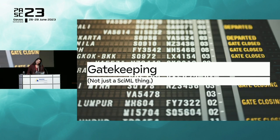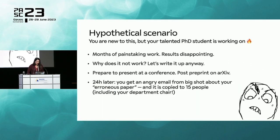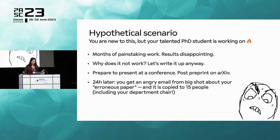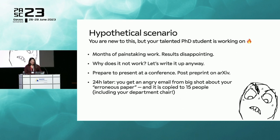Another anti-pattern we should acknowledge — not particular to scientific machine learning but a sorry affair recently — is gatekeeping. Here's a hypothetical scenario: you have a talented PhD student who has done months of painstaking work. The results are disappointing. You write it up anyway and post a preprint on arXiv. Twenty-four hours later, you get an angry email from a big shot about your 'erroneous' paper, copied to 15 people including your department chair. What kind of behavior is that? Do we accept famous researchers with a lot of clout bullying mid-career researchers because they disagree with results? Or can we do better?